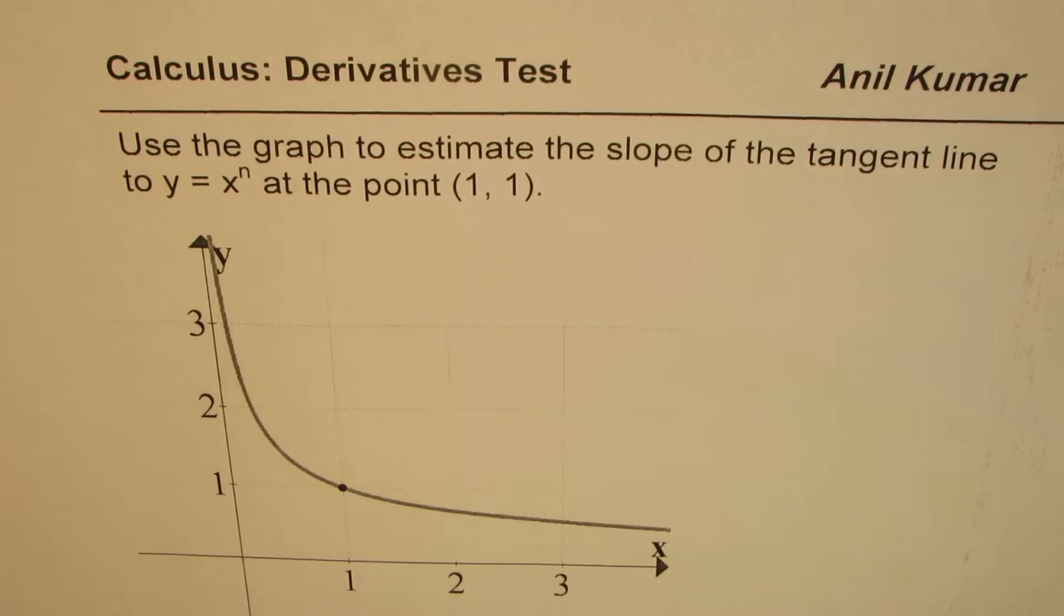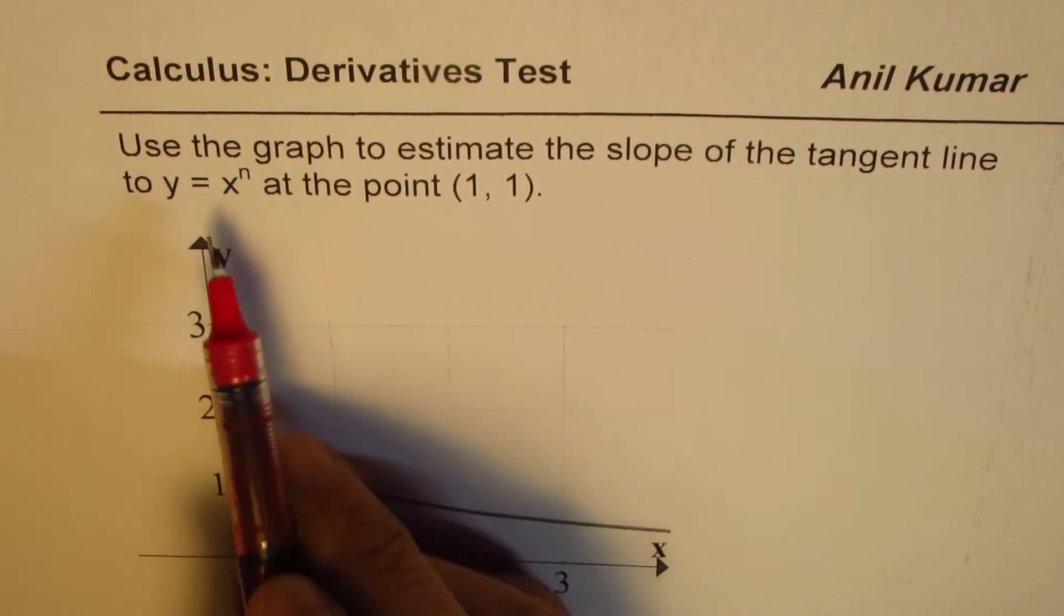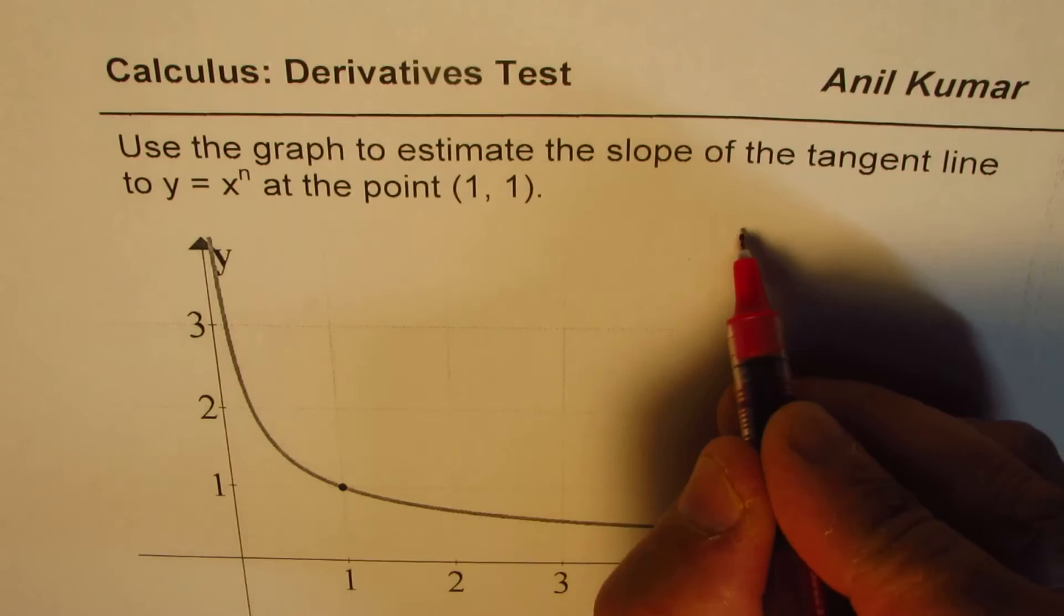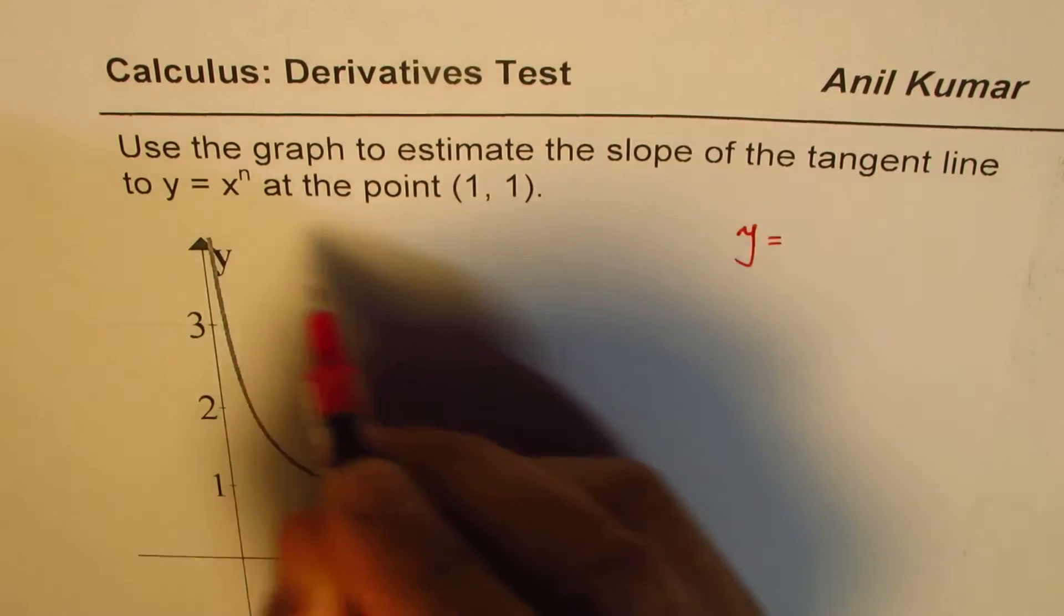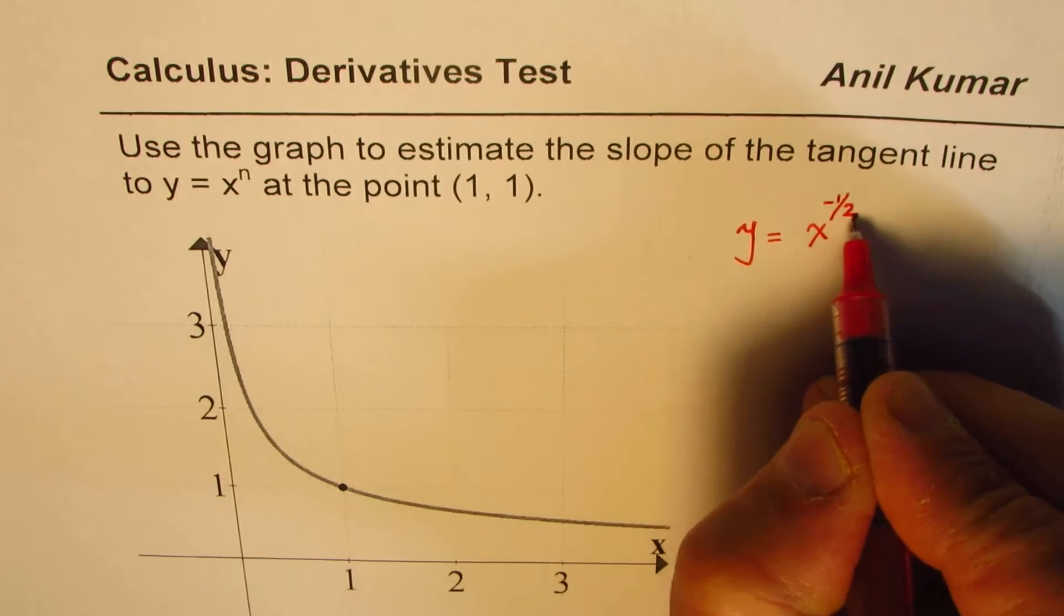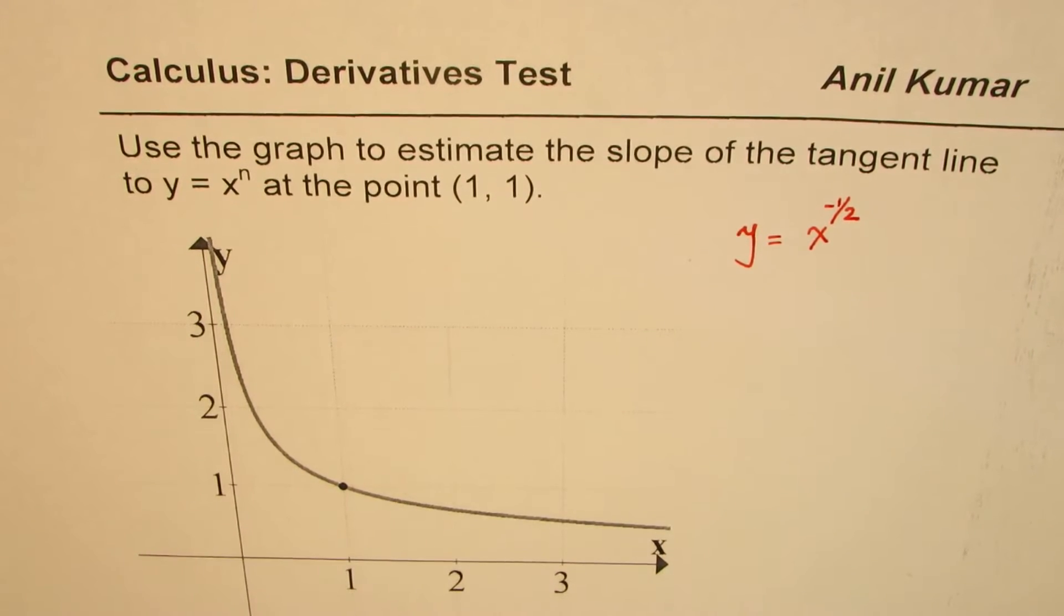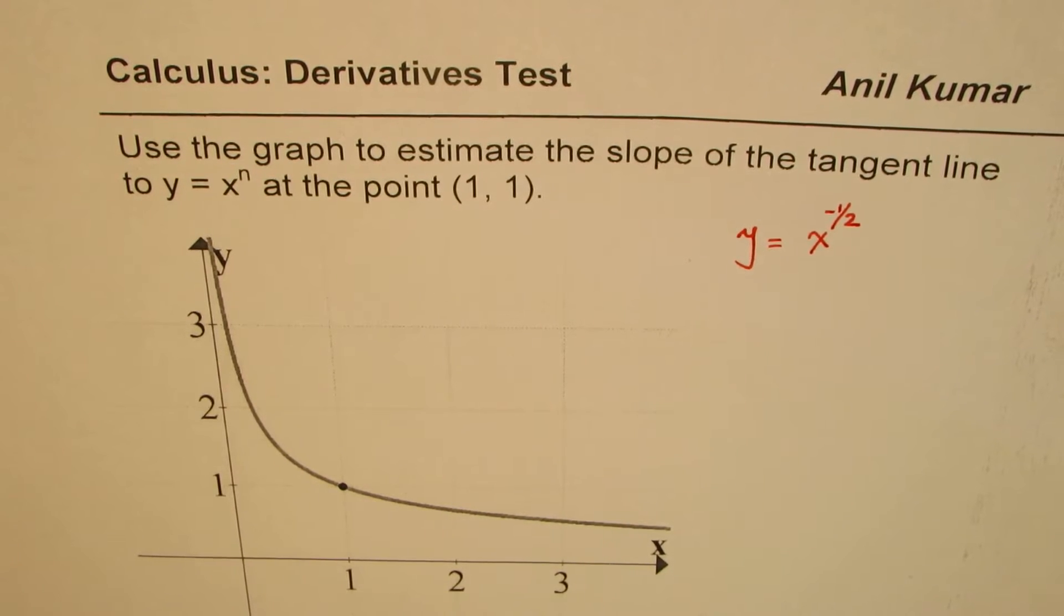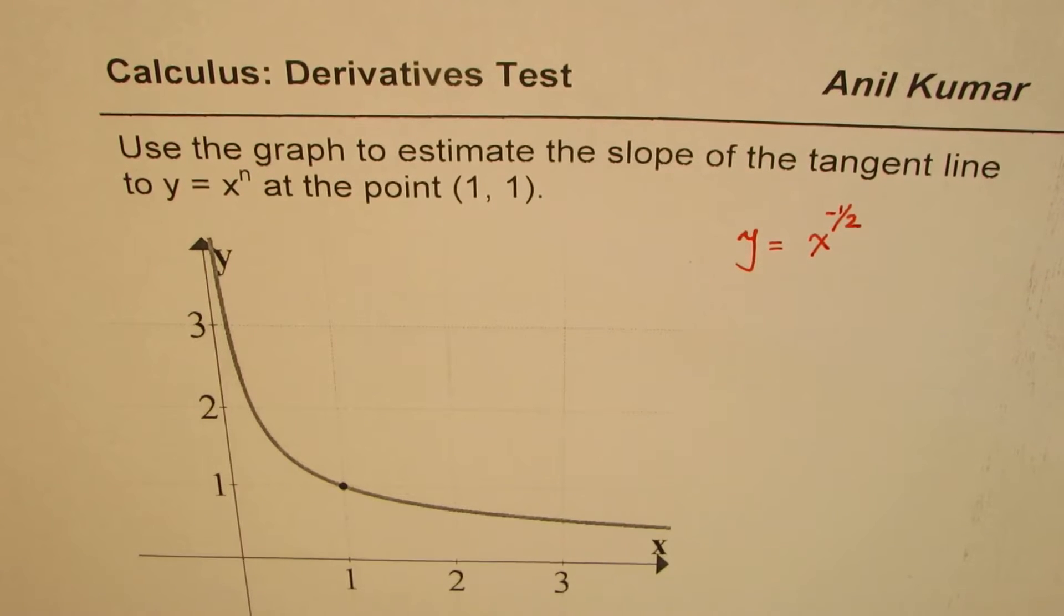So basically what we have is graph of a function which is x to the power of n. Well, it seems to be you could have written this y function as x to the power of minus half, which kind of matches to that. But there is no need to write the equation and then find or estimate the slope of the tangent.